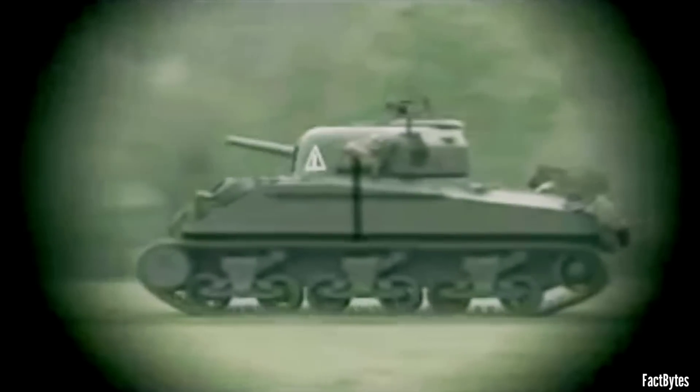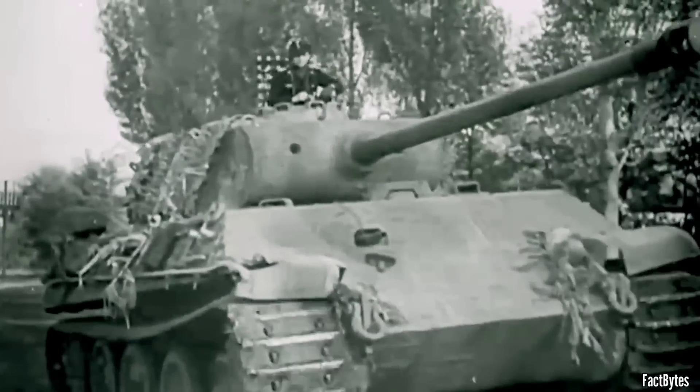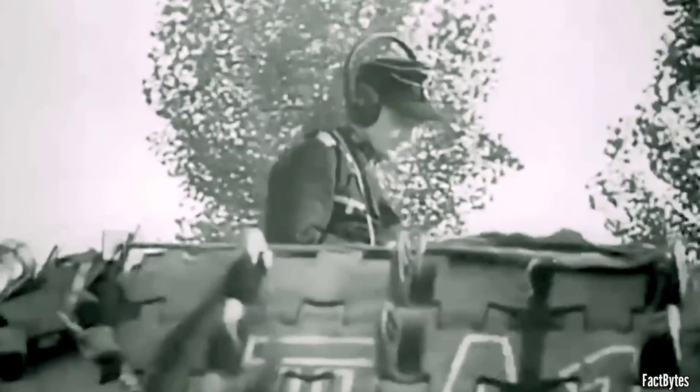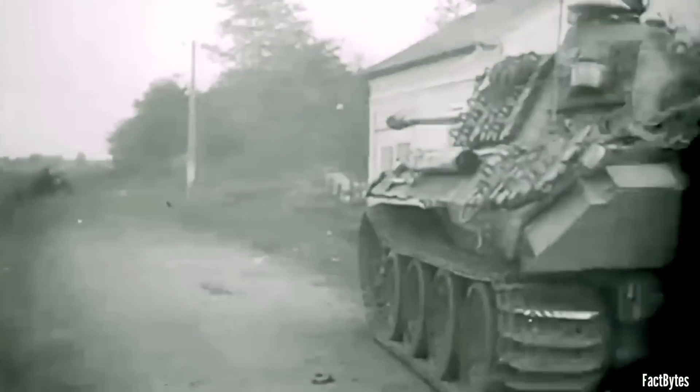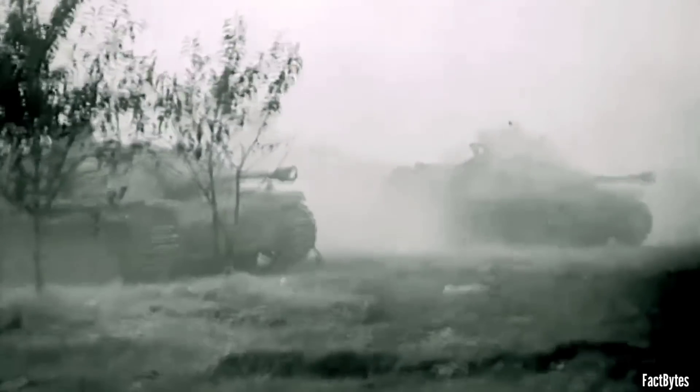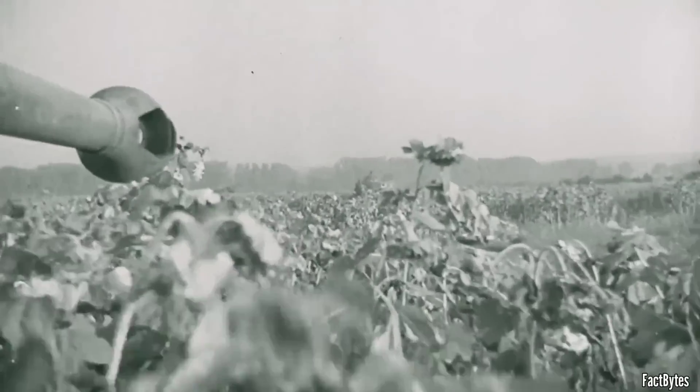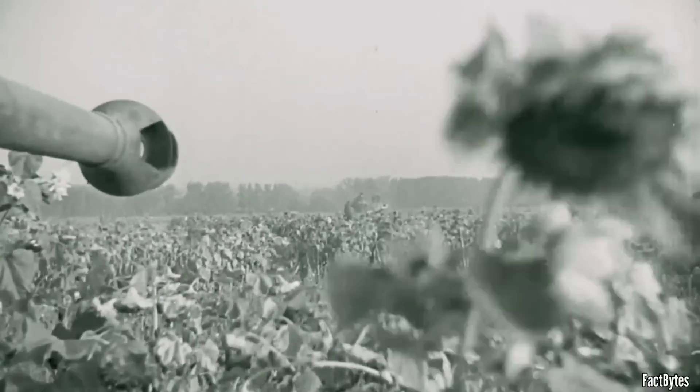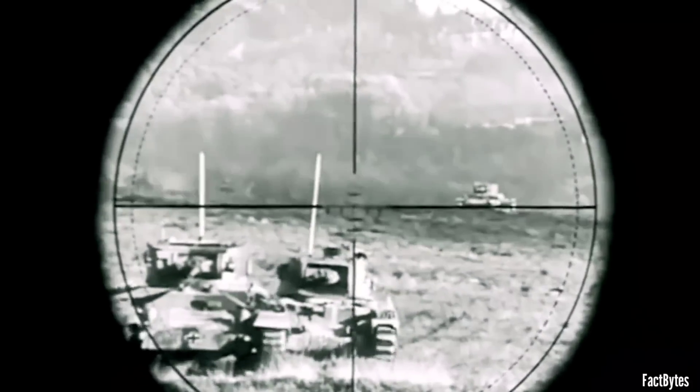The field of view is inversely proportional to the magnification of an optical device. For Zeiss-designed TZF gun sights, the specifications were as follows: At 2.5x magnification, the FOV was 28 degrees. At 5x magnification, the FOV reduced to 14 degrees. In comparison, Allied tank optics offered smaller FOV at similar magnification levels. For instance, at 3x magnification, Allied optics provided a FOV of 13 degrees.